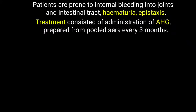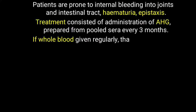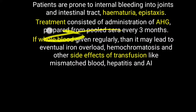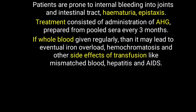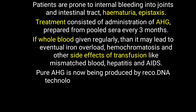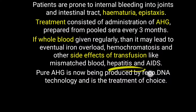The basic treatment of Haemophilia A consists of administering AHG, which is prepared from pooled sera and given every three months, providing a sufficient amount of AHG. If whole blood is given instead, it may lead to eventual iron overload, so it is preferable to administer AHG directly from pooled sera. Giving whole blood can cause haemochromatosis and other side effects such as mismatched blood transfusion, hepatitis, and AIDS. Pure AHG is now produced easily by recombinant DNA technology and is the main line of treatment for Haemophilia A.